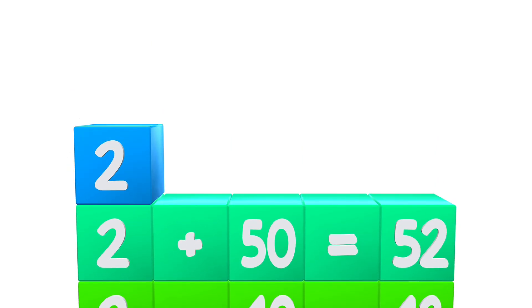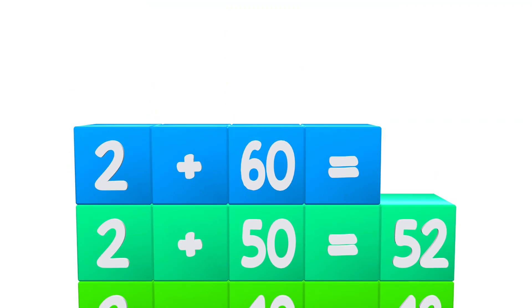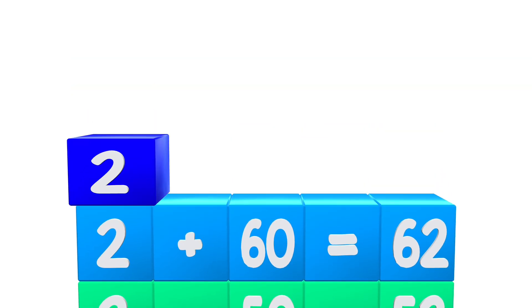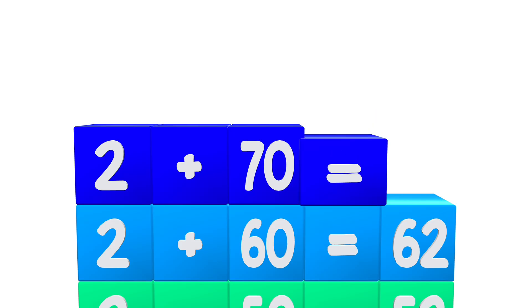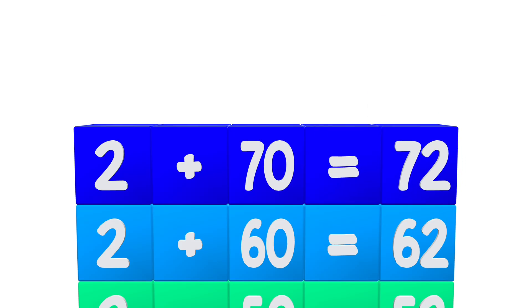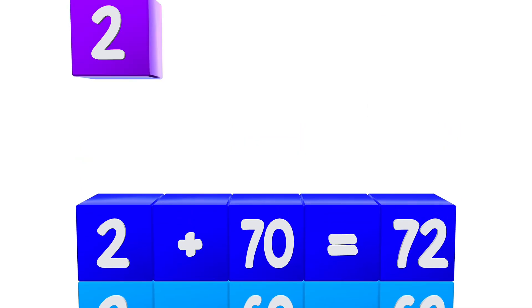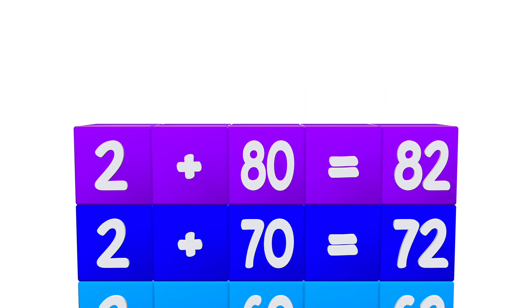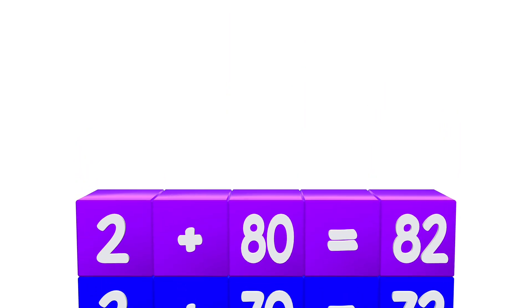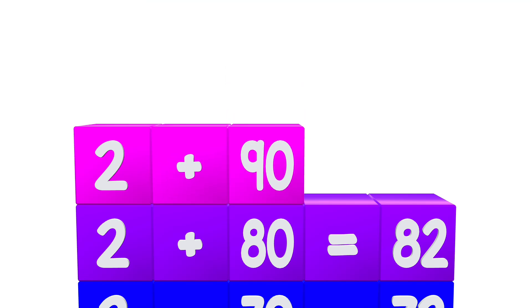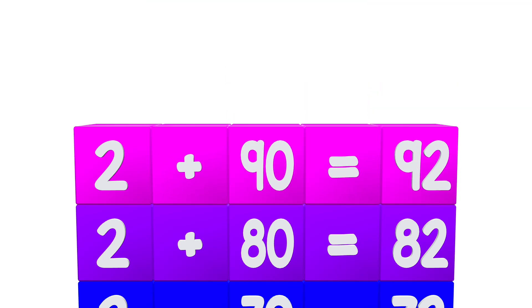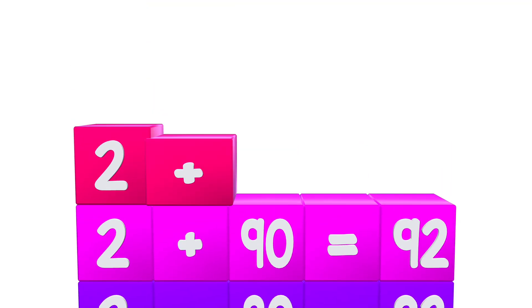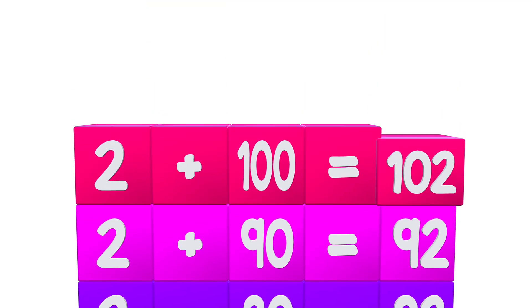2 plus 60 equals 62. 2 plus 70 equals 72. 2 plus 80 equals 82. 2 plus 90 equals 92. 2 plus 100 equals 102.